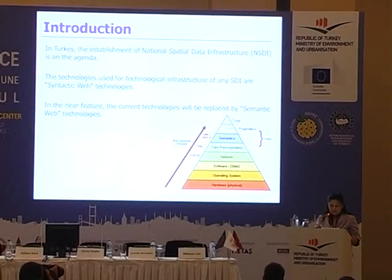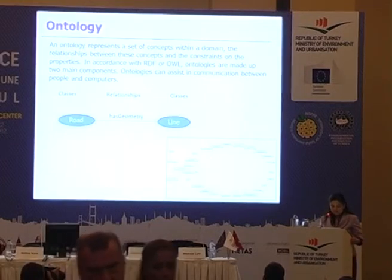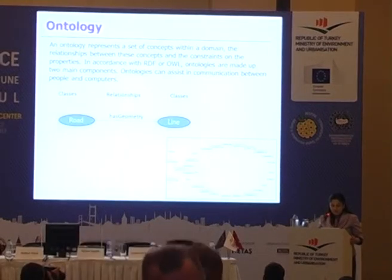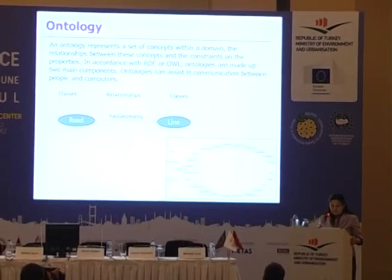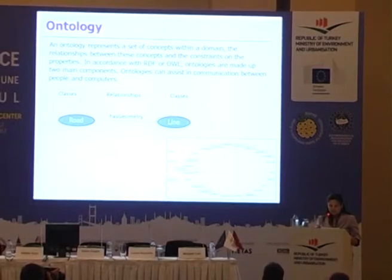An ontology represents a set of concepts within a domain, the relationships between these concepts, and the constraints on the properties. In accordance with RDF or OWL, ontologies are made up of two main components: classes or relationships.